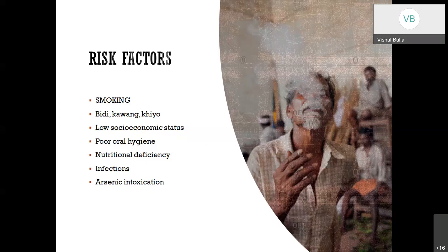Nutritional deficiency — specifically folate deficiency — has been identified as a risk factor. Regarding infections, the only pathogens that have received attention in TAO are Rickettsia and oral bacteria. Arsenic intoxication is also notable: arsenic finds its way into tobacco smoke, especially during tobacco farming, and is also used as an adulterant in cocaine, amphetamine, and cannabis.